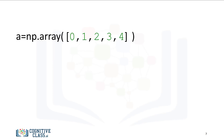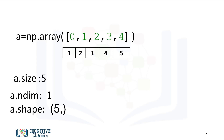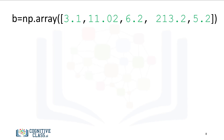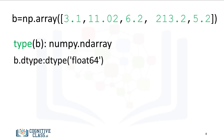Let's review some basic array attributes using the array a. The attribute size is the number of elements in the array. As there are five elements, the result is five. The attribute ndim represents the number of array dimensions, or the rank of the array, in this case one. The attribute shape is a tuple of integers indicating the size of the array in each dimension. We can also create a NumPy array with real numbers; examining the dtype attribute shows float64 as the elements are not integers. Check out numpy.org for more attributes.